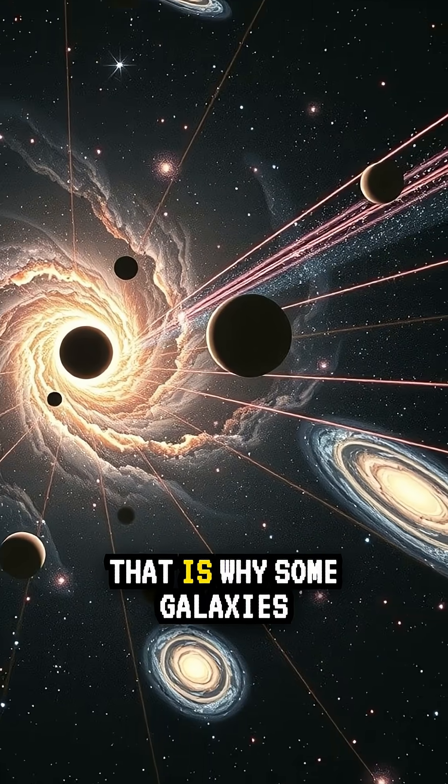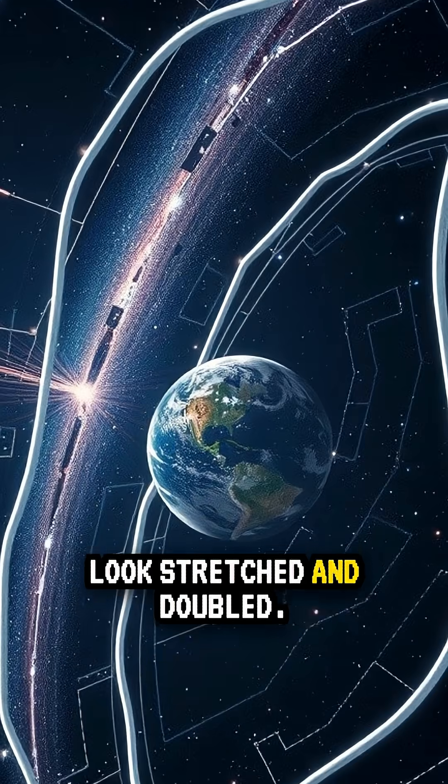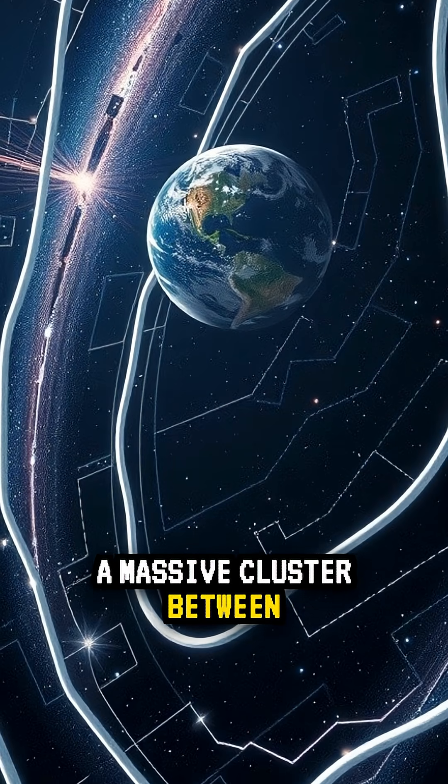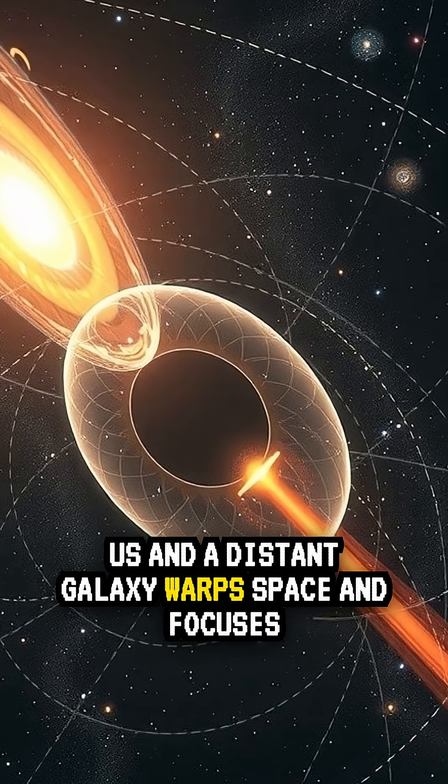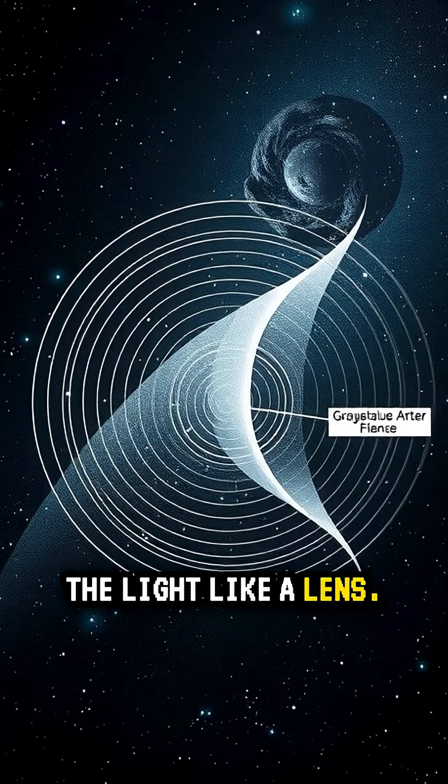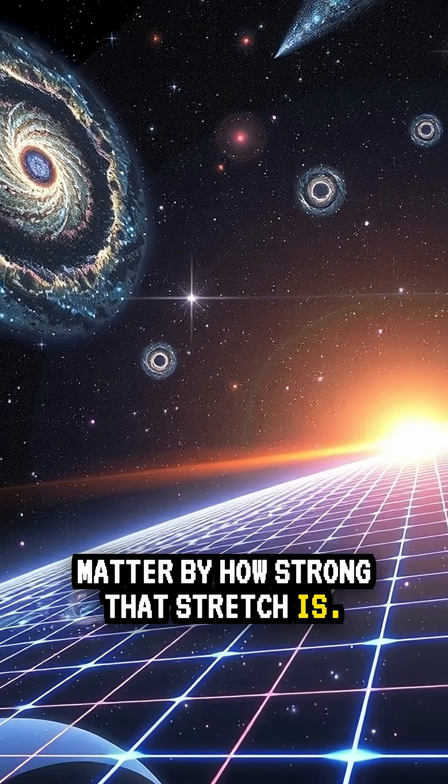Lens. Gravity bends light. That is why some galaxies look stretched and doubled. A massive cluster between us and a distant galaxy warps space and focuses the light like a lens. We can weigh invisible matter by how strong that stretch is.